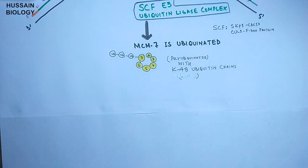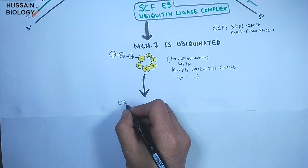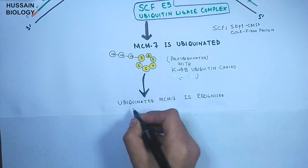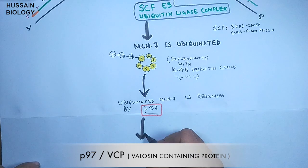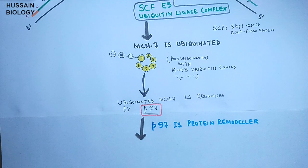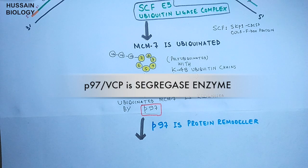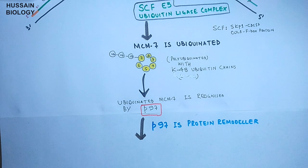But in this case, the ubiquitinated protein is not degraded because here the ubiquitinated protein is instantly recognized by P97 protein, which is a protein remodeler. The P97 is the transitional endoplasmic reticulum ATPase, also known as valosin-containing protein. This is the segregase protein or segregase enzyme which has the function to segregate complex proteins.